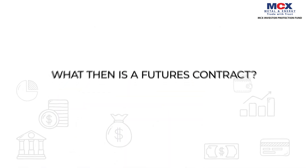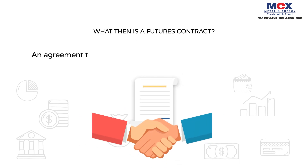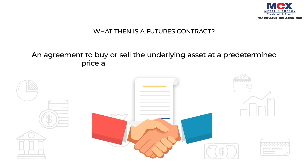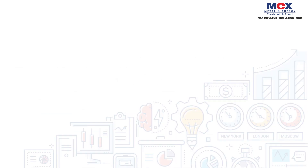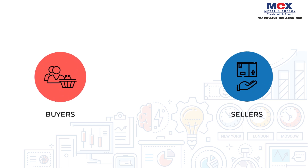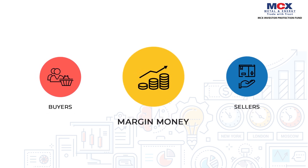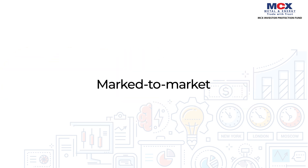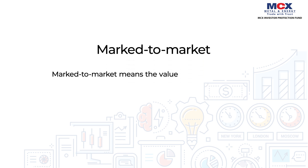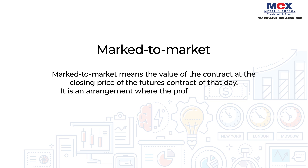What is a futures contract? A futures contract is an agreement to buy or sell the underlying asset at a predetermined price at the expiry of the futures contract. These are standardized contracts traded on a derivative exchange. When entering a futures contract, buyers and sellers have to pay margin money, which can be as low as 5% of the contract value. The money is blocked in your account and marked-to-market at the end of each day — meaning profit and losses are settled daily at the closing price.